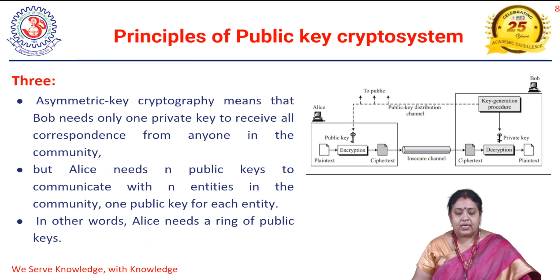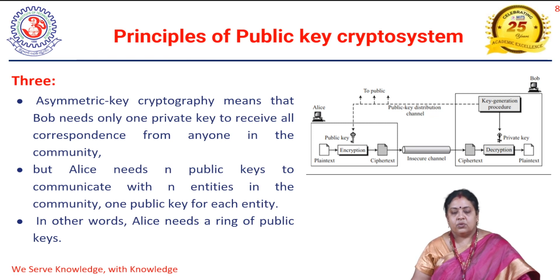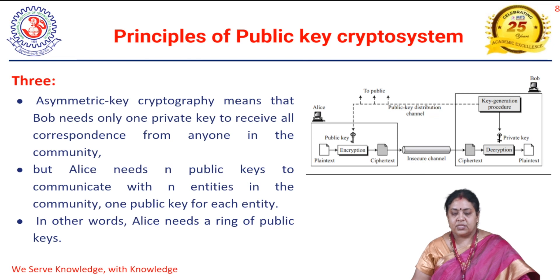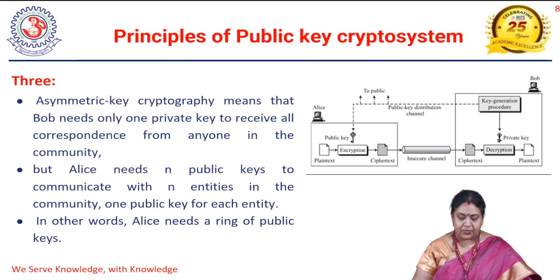In asymmetric key cryptography, the receiver needs only one private key to receive all correspondence from everyone in the community. But the sender needs n public keys — one for each recipient. The sender requires the public key of the receiver to encrypt, and that message can be decrypted using only the private key. Bob can receive messages from anyone and open them with his own private key, so Bob requires only one key. But if Alice wants to send messages to different people, she requires each person's public key — Alice needs a ring of public keys, whereas Bob needs only one private key.